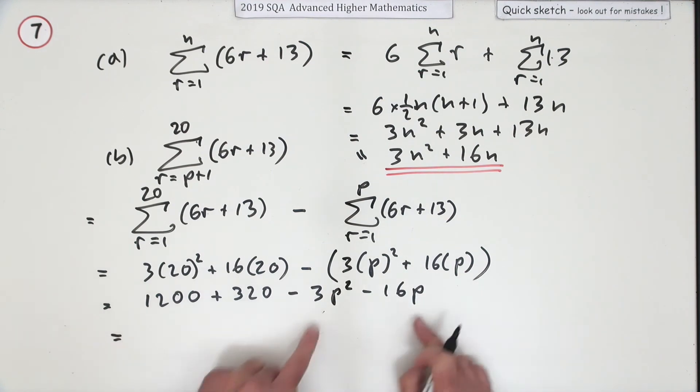Now just tidy that up, so I can reverse the order of those two. So that's 1520, so 1520 minus 16p minus 3p squared, just to put them into some sort of order.